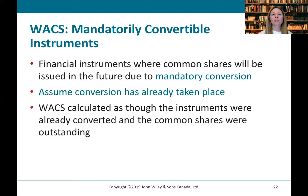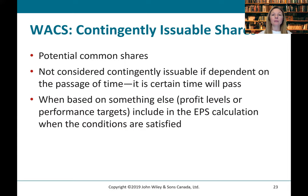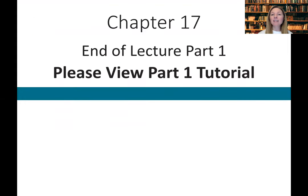For mandatorily convertible instruments — financial instruments where common shares will be issued in the future due to mandatory conversion — we assume conversion has already taken place and calculate the weighted average number of common shares as though those instruments were already converted. For contingently issuable shares, if issuance depends on something other than the passage of time, we include it in EPS as soon as the conditions are satisfied. Basically, if someone can convert to a common share, we assume they would. That's the end of Chapter 17, Part 1 — please join me for the tutorial section on basic earnings per share calculations.